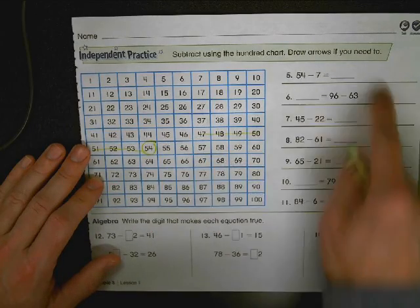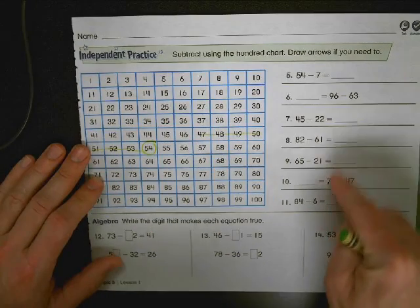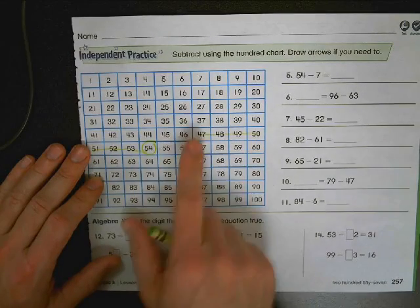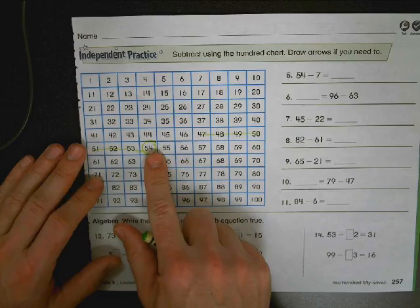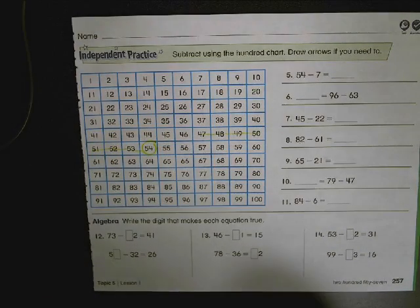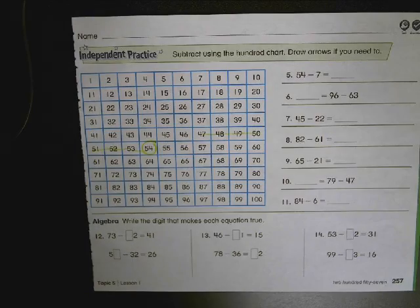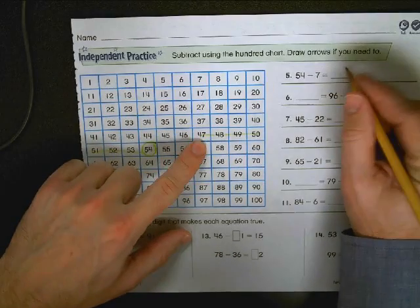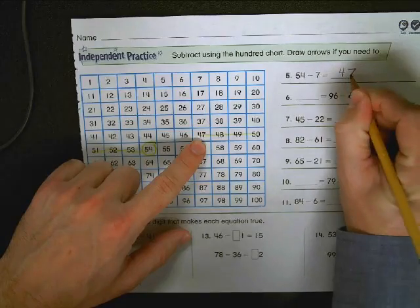Now this hundreds chart is going to be used for 1, 2, 3, 4, 5, 6, 7 problems. My suggestion to you is not make a mess of the first equation. Otherwise you're going to have a hard time reading it for problems later on. So 54 minus 7, 47. Go ahead and write that in.